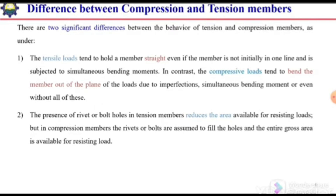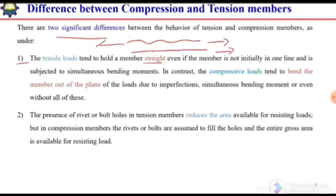There are two significant differences between compression and tension members. The first difference is that tensile loads tend to hold a member straight. So even if a member is not straight, when we apply the load on that member, it will straighten — it will become a straight member.